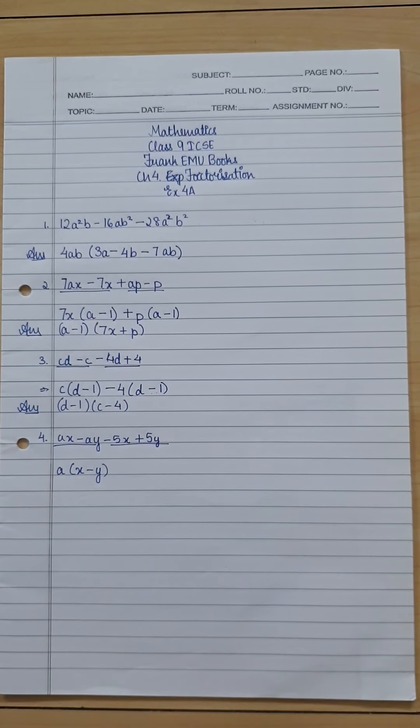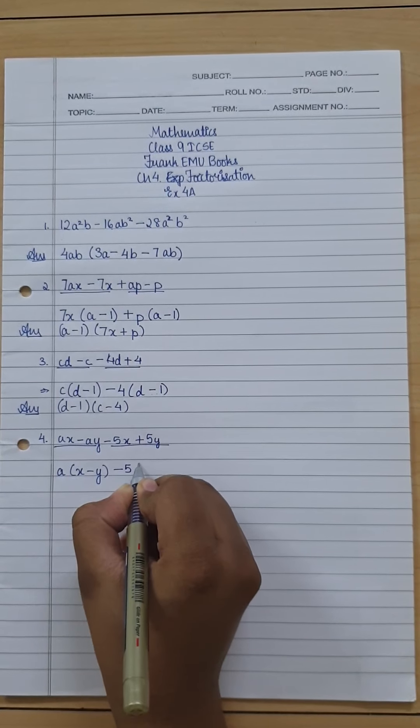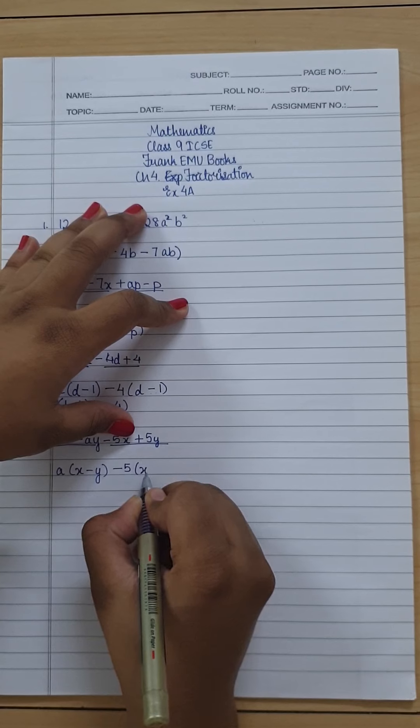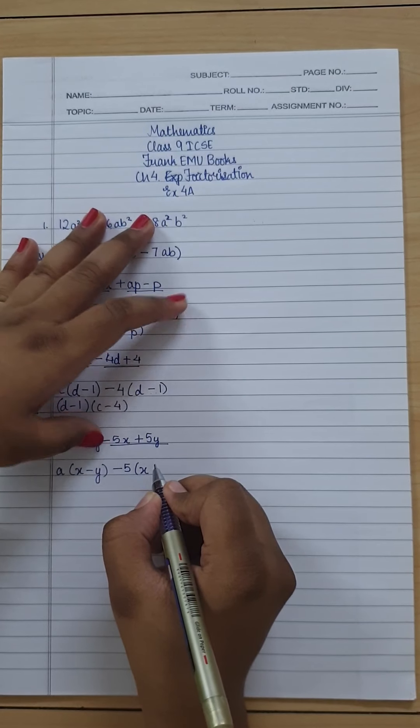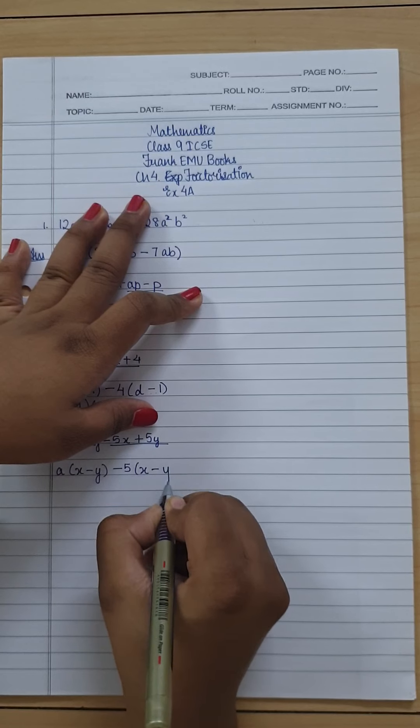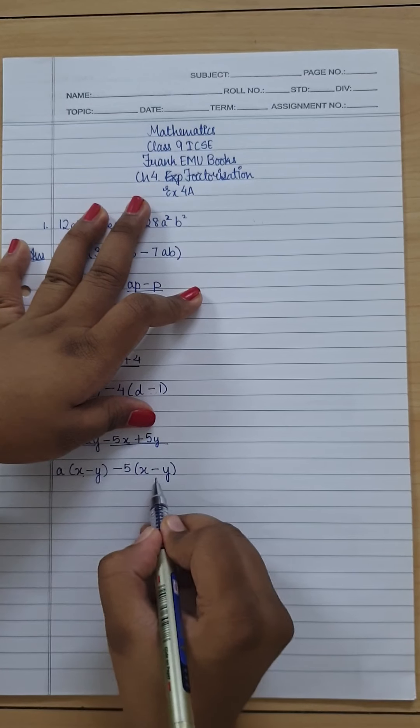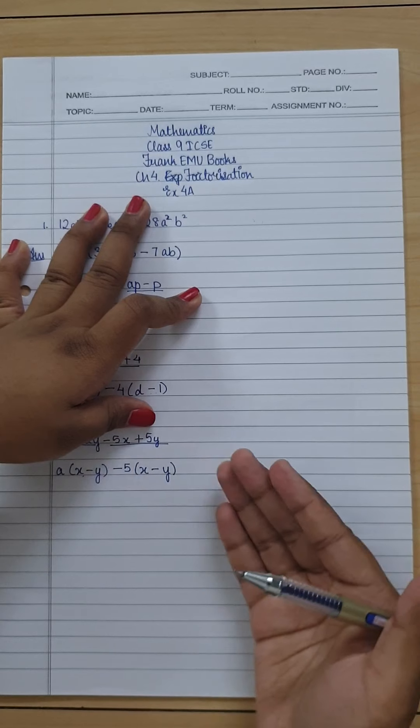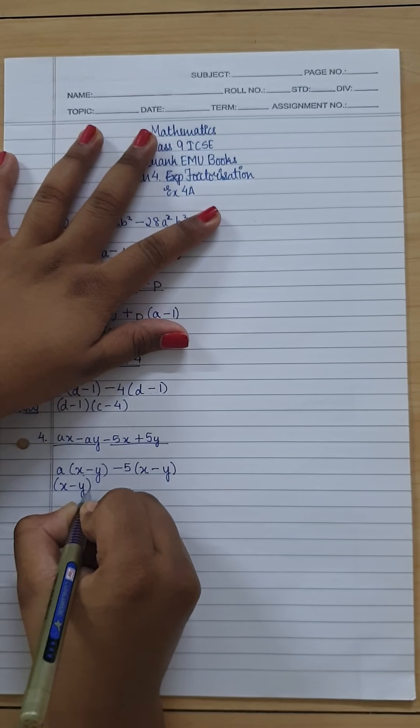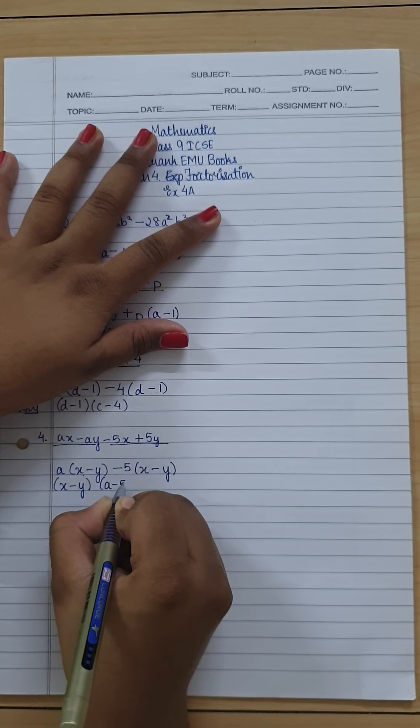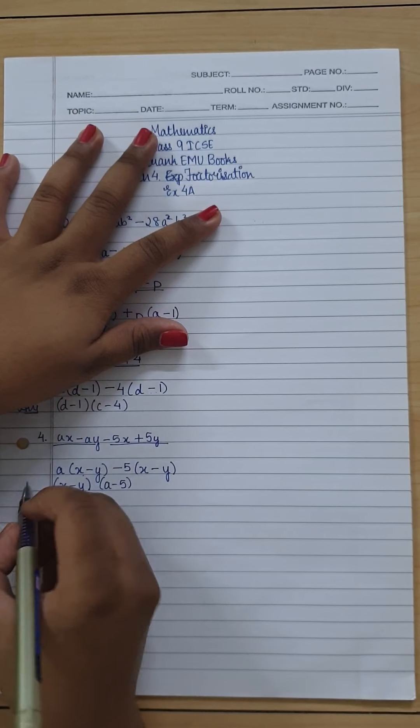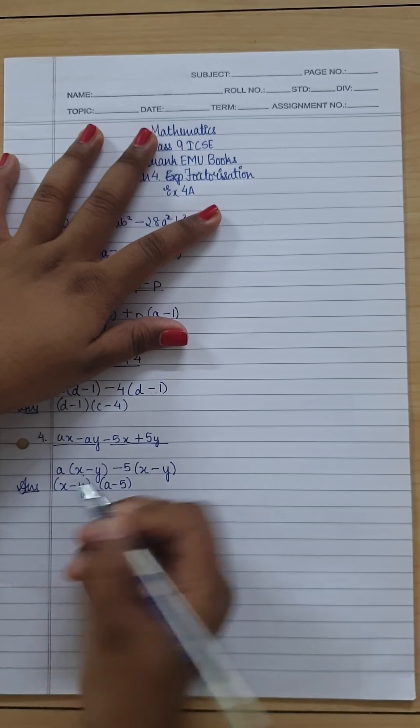So what I do is I take -5 out of this. So since -5 is out of here I get x, and to get the 5 out I have taken the -5 out, so it's -y over here. So both x - y are same on both sides. Now what I do is I take x - y in one bracket and a - 5 in the other bracket because that's what is on the outside of the two brackets. So that is the answer for our fourth question.